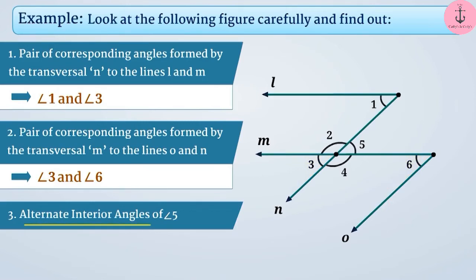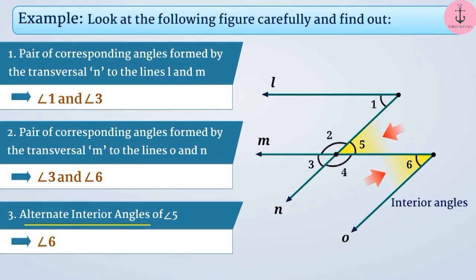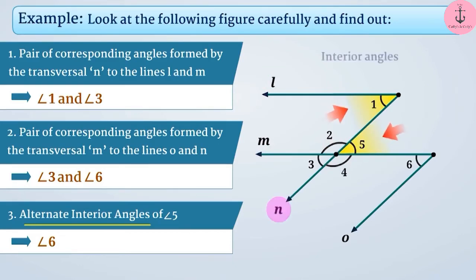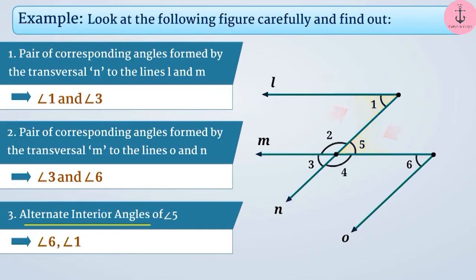Now let us find the alternate interior angles of angle 5. Angle 6, formed by transversal M to lines O and N, has a different vertex from angle 5, and both angles are interior and on opposite sides of transversal M. Therefore, angle 6 is the alternate interior angle of angle 5. Similarly, angle 1, formed by transversal N to lines L and M, also has a different vertex from angle 5, and both are interior on opposite sides of transversal N. So the alternate interior angles of angle 5 are angle 6 and angle 1.